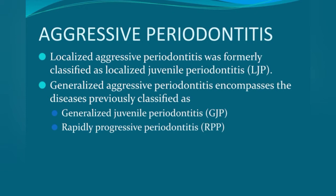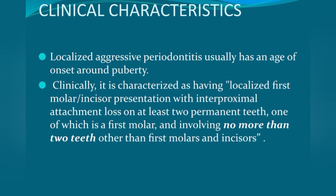There are two types of aggressive periodontitis: localized and generalized. Localized aggressive periodontitis was formerly classified as localized juvenile periodontitis. Generalized aggressive periodontitis encompasses the disease previously classified as generalized juvenile periodontitis and rapidly progressive periodontitis. So localized juvenile periodontitis is now known as localized aggressive periodontitis, and generalized juvenile periodontitis and rapidly progressive periodontitis are now known as generalized aggressive periodontitis.